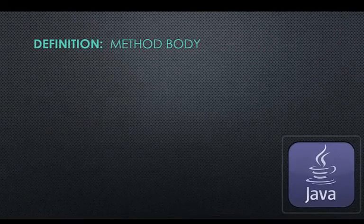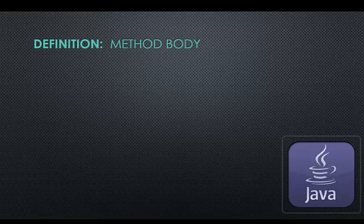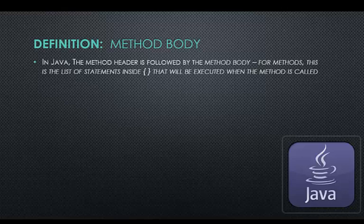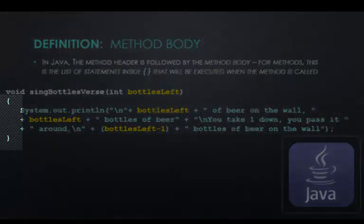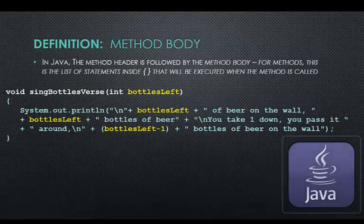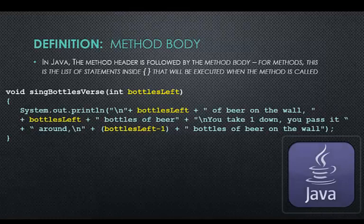After writing the method header declaration, we write the definition. This is called the method body. In Java, the method header is followed by the method body. For methods, this is the list of statements inside the curly braces that will be executed when the method is called. Here is the body for Sing Bottles Verse. Note the set of braces are required by Java. They delineate the beginning and end of the method's code. This method's code is one long print line.